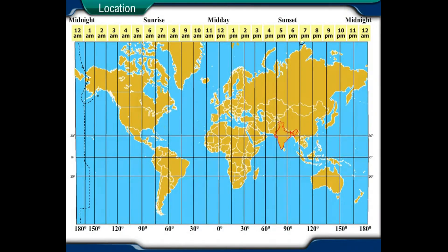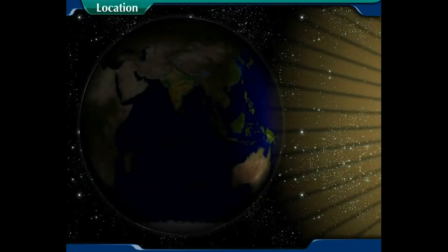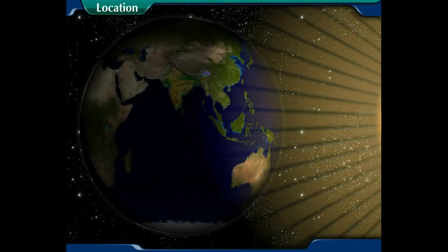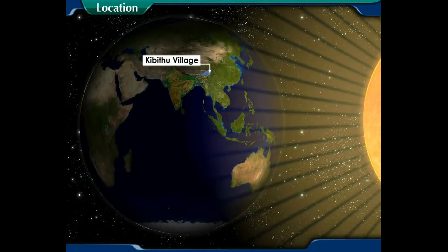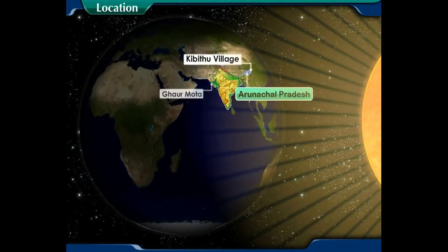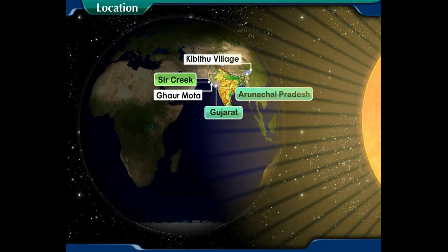Although India is a big country, we cannot follow different time in each city. For example, the difference between the sunrise at Kibithu village in Arunachal Pradesh and that of Gaur Murta near Sir Creek in Gujarat is about 116 minutes.